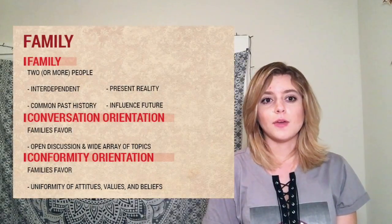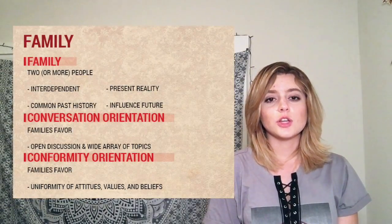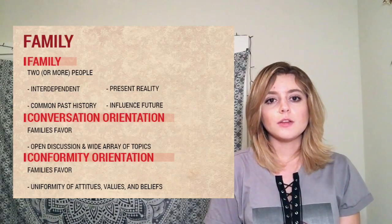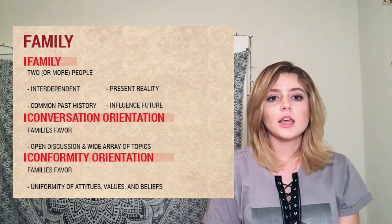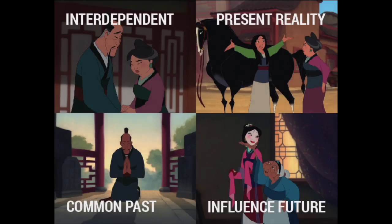For my first slide I'm covering the topic of family, since Mulan introduces her family first within the movie. Family can be defined as two or more people who are interdependent, share a present reality and a common past, and influence the future for one another. Interdependent means relying on one another, seen in this first picture with Mulan's parents. The present reality involves Mulan and her mother preparing for her matchmaker interview. The common past is represented by the ancestral stones in the background where the father sends his prayers, and influencing the future is done by Mulan's grandmother, who gives her hope as well as a cricket for her troubles.